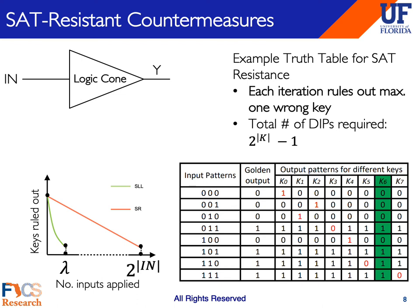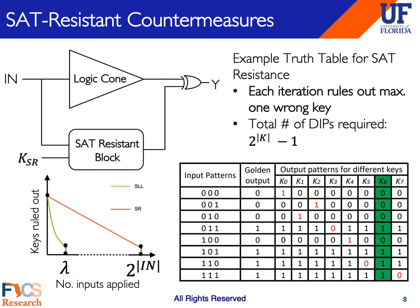To counter SAT-based attacks, several specific SAT-resistant countermeasures have been recently proposed. The common idea behind most of these approaches is to insert a SAT-resistant logic block into the circuit. This block forces the SAT-attack tool to apply brute force—that is, the tool is forced to apply all possible input patterns to rule out all possible incorrect keys. Without this block, the attack would only take a few iterations to prune out the entire incorrect key space. However, this block limits the discriminating ability of SAT-attack via distinguishing input patterns, so the attack can converge on the correct key only after applying all 2^n input patterns.